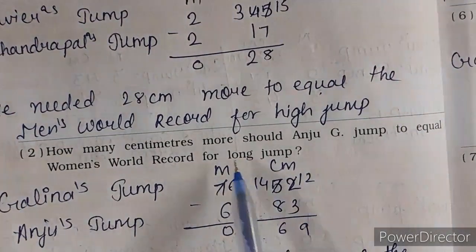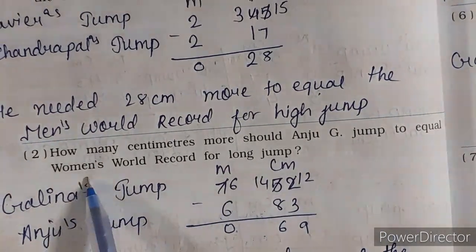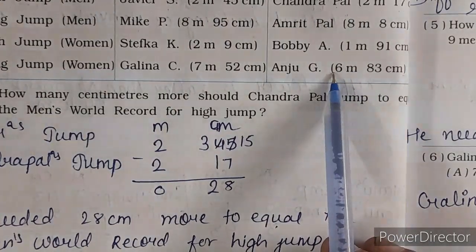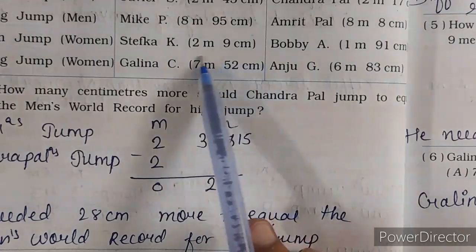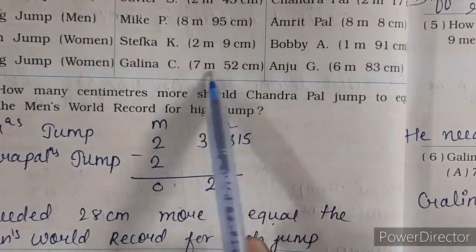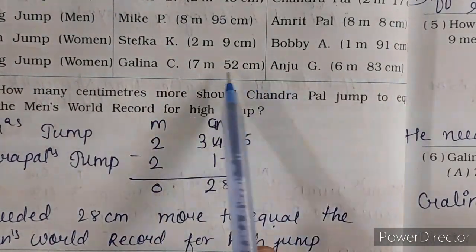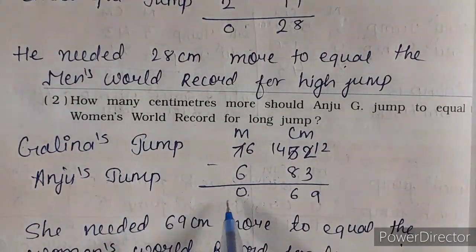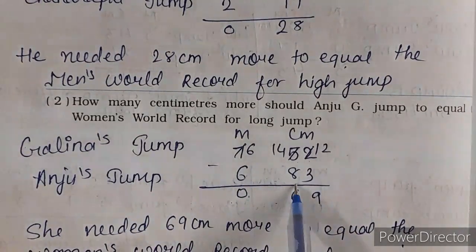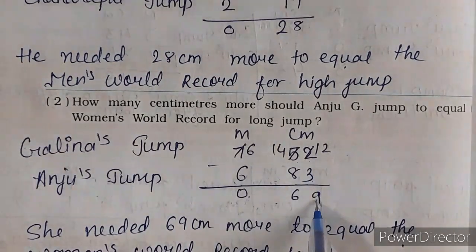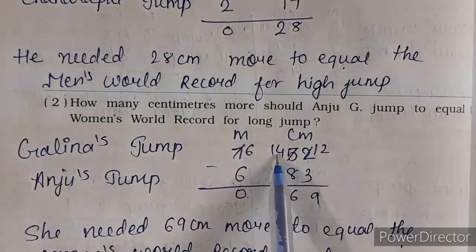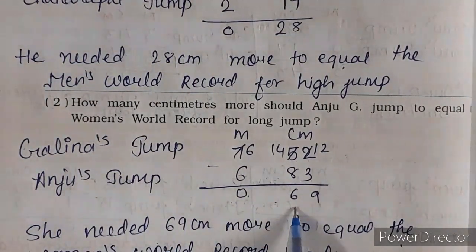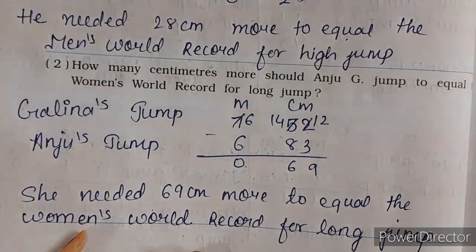Now the next question — how many centimeters more should Unjuica jump to equal the women's world record for long jump? Unjuica ki jump hai 6 meter 83 centimeter. World record Galena ka hai 7 meter 52 centimeter. Galena ka jump mein se Unjuica ka jump minus karenge — 7 meter 52 centimeter minus 6 meter 83 centimeter. Solving with borrowing: 12 mein se 3 jayega 9, carry forward liya, 14 minus 8 equals 6, 6 minus 6 zero. So kitne centimeter ki zaroorat hai — 69 centimeter ki zaroorat hai women's world record ko equal karne ke liye.